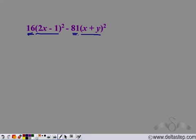But also observe that sixteen can be written as four squared and eighty-one can be written as nine squared. So we can actually put these coefficients inside the square part. So let's do it.